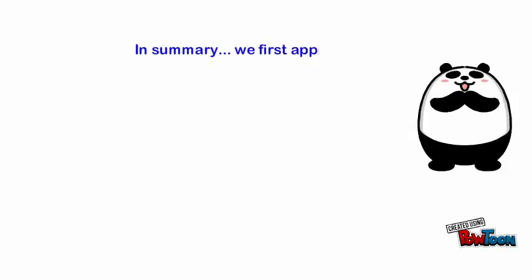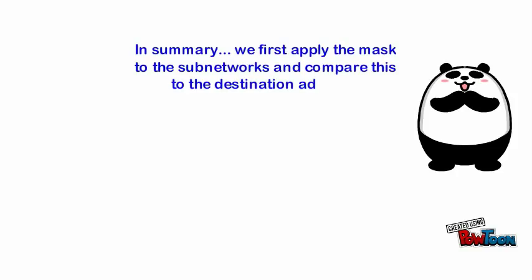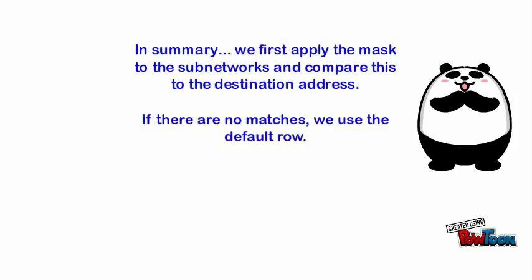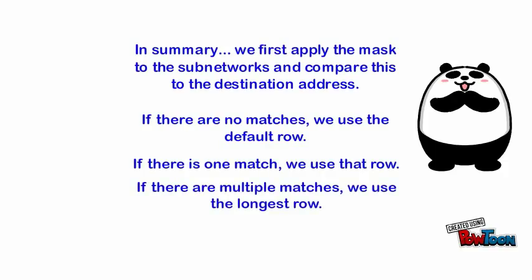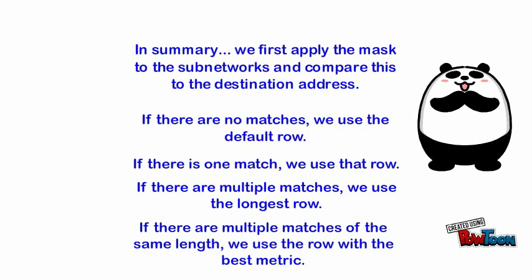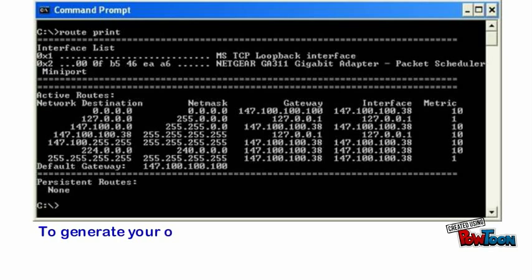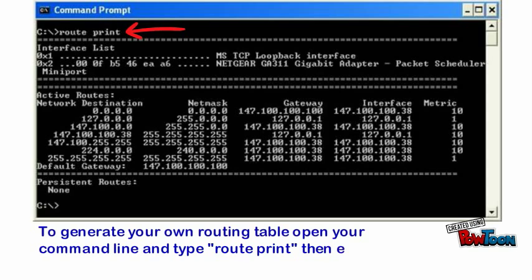In summary: first apply the mask to the subnets and compare this to the destination address. If there are no matches, use the default row. If there is one match, use that row. If there are multiple matches, use the longest row. If there are multiple matches of the same length, use the row with the best metric. To generate your own routing table, open your command line and type 'route print' then enter to see the magic happen. Thanks for watching!